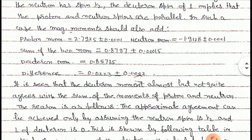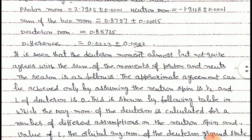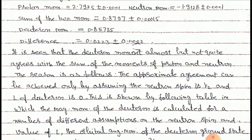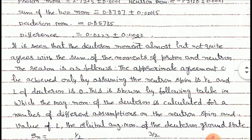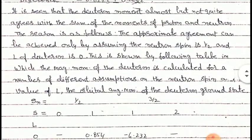So we obtain a difference of about 0.0223 nuclear magnetons. It is seen that the deuteron magnetic moment almost, but not quite, agrees with the sum of the moments of the proton and neutron. The approximate agreement can be achieved only by assuming the neutron spin is half and L of the deuteron is zero.